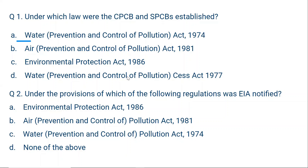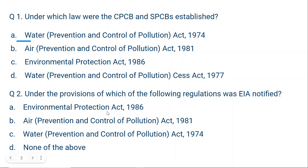Question 2: Under the provisions of which regulation was EIA notified? Option A: Environmental Protection Act 1986. Option B: Air Prevention and Control of Pollution Act 1981. Option C: Water Prevention and Control of Pollution Act 1974. Option D: None of the above. EIA was notified under the Environmental Protection Act 1986. This is a very common question in UGC NET. Environmental Impact Assessment is a tool to protect the environment, so the answer is always the EPA Act 1986.